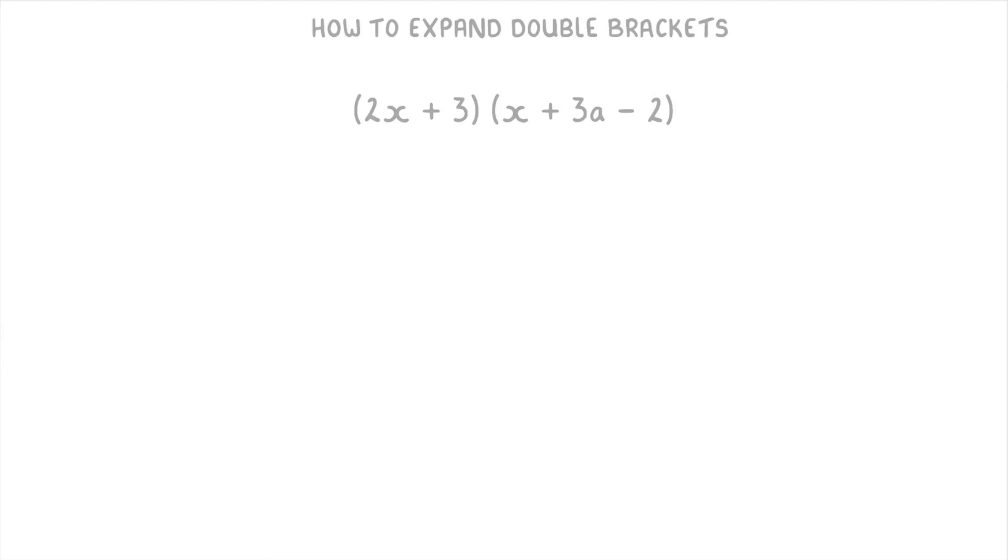So to expand this one, you'd want to draw your arrows from the 2x, to the x, the 3a, and the minus 2. Because you need to multiply by all of the terms in the second bracket. And you do the same thing for the 3. So you put arrows to the x, the 3a, and the minus 2. Then we just have to do all of these multiplications. To get 2x squared plus 6xa minus 4x plus 3x plus 9a minus 6.